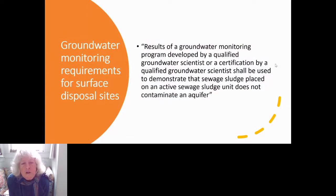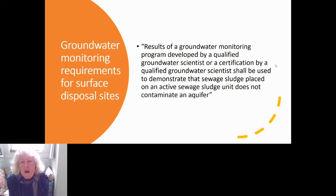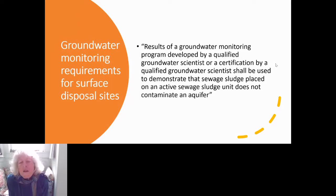One of the critical things if an area is determined to be a surface disposal site is groundwater monitoring. This requires getting a qualified groundwater scientist to look at the site and determine if there is potential for groundwater contamination. They need to look at the depth of groundwater, whether the groundwater is usable, and other associated parameters — then either determine that monitoring is required, or that there's sufficient depth so there isn't a chance for groundwater contamination.